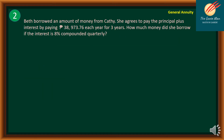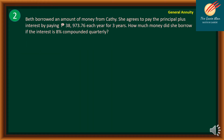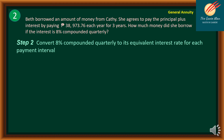Step number one: illustrate the cash flow in the time diagram. The present value is unknown. The regular payment is 38,973.76 pesos for 3 years, and we want to find the present value. Step number two: convert 8% compounded quarterly to its equivalent interest rate for each payment interval. Future value one equals future value two — the future value for annual payment equals the future value for quarterly payment.